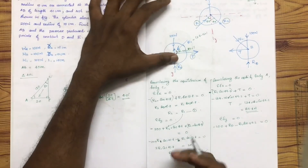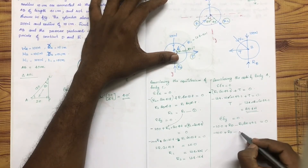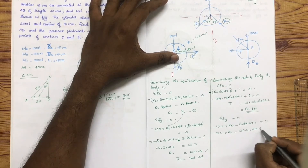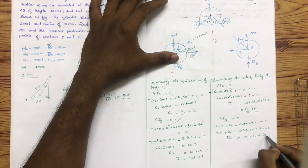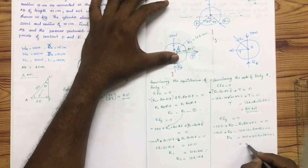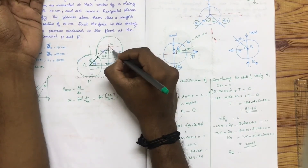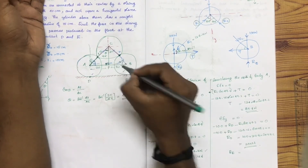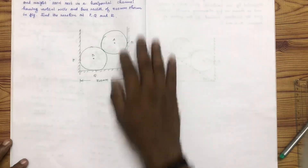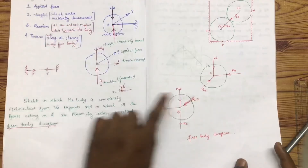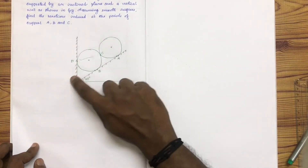Taking sigma Fy equal to 0 for body A: Rd minus 100 minus R1 sin 49.2 equals 0. Therefore Rd equals 100 plus 134.16 into sin 49.2. The x-axis is parallel to the surface and the y-axis is perpendicular to it.